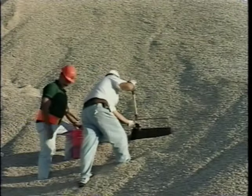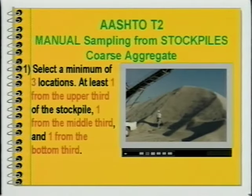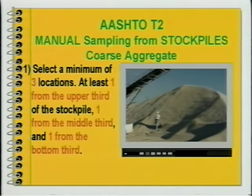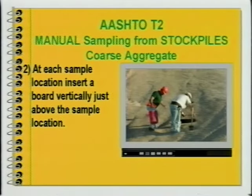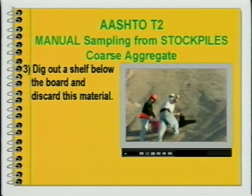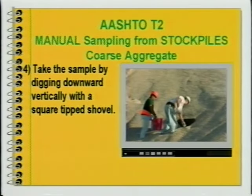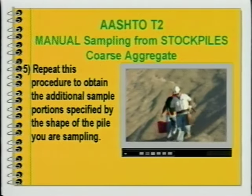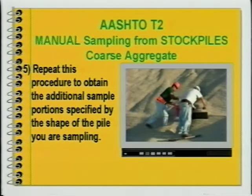To review the procedures for manual sampling from a coarse aggregate stockpile: 1. Select a minimum of three locations — at least one from the upper third, one from the middle third, and one from the bottom third. 2. At each sample location, insert a board vertically just above the sample location. 3. Dig out a shelf below the board and discard this material. 4. Take the sample by digging downward vertically with a square-tip shovel. 5. Repeat this procedure to obtain the additional sample portions specified by the shape of the pile.